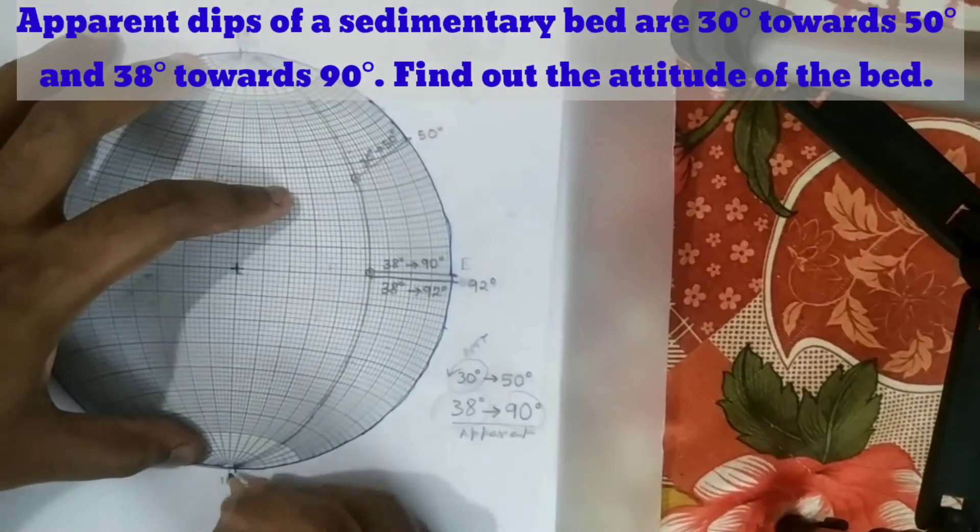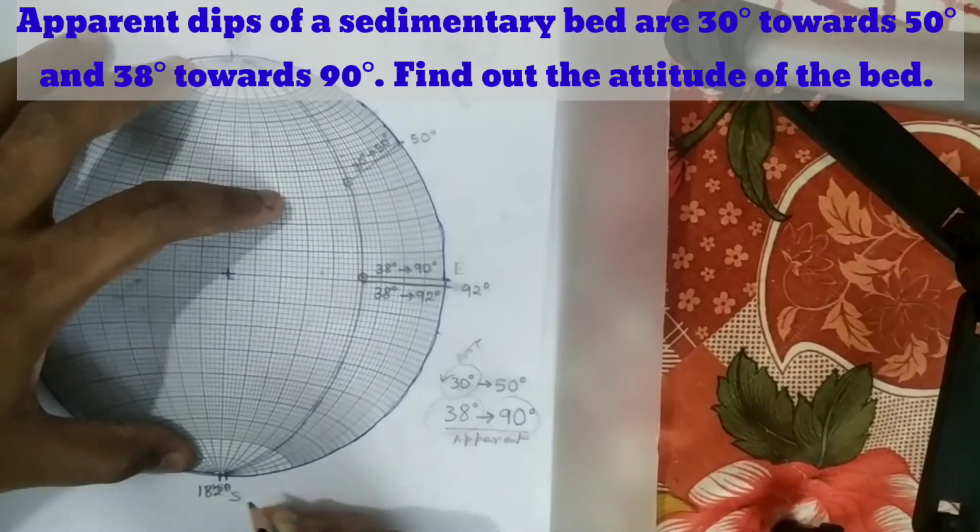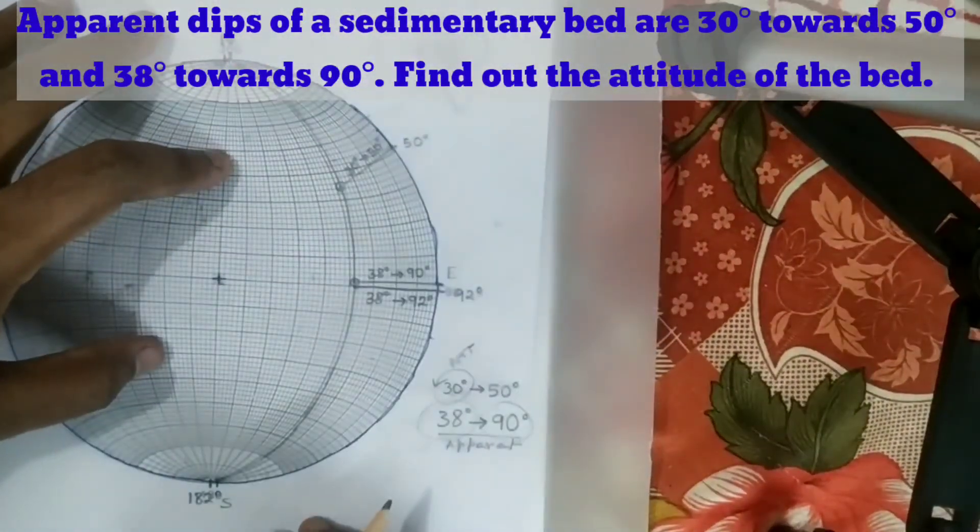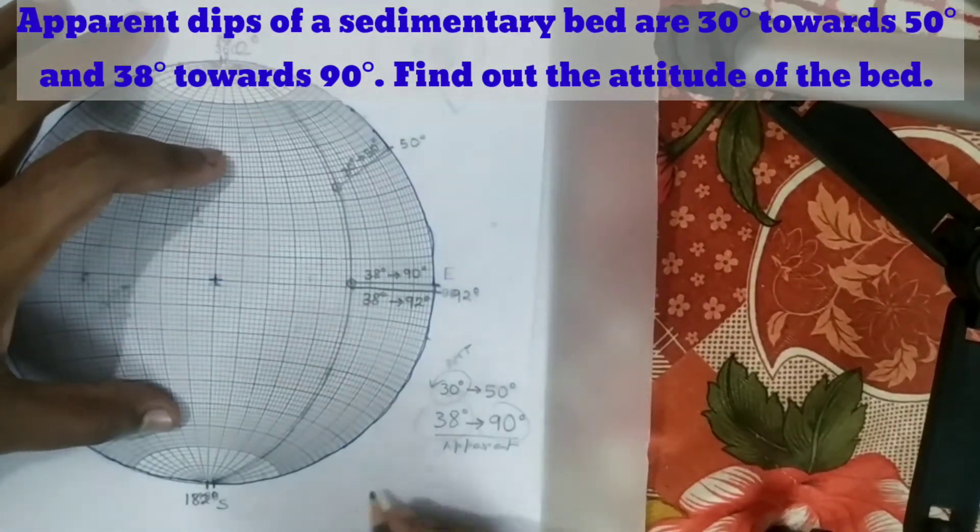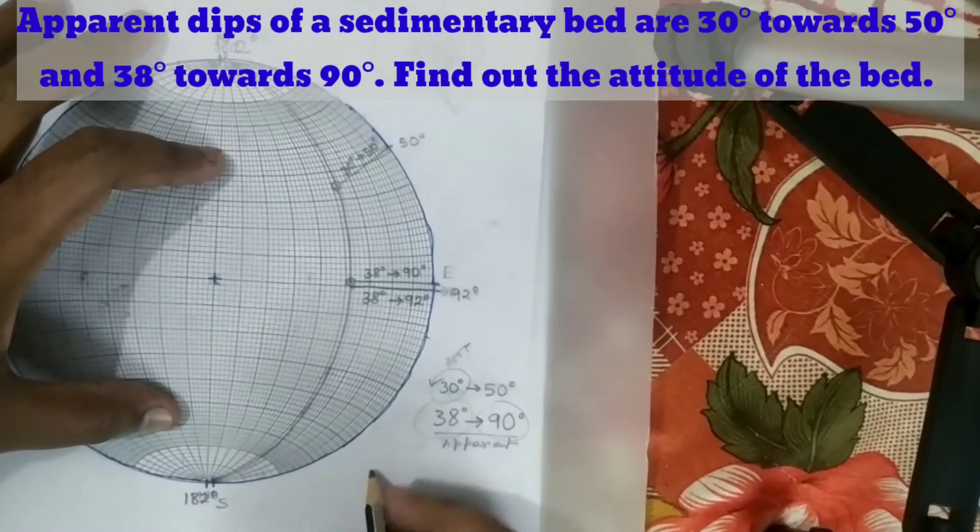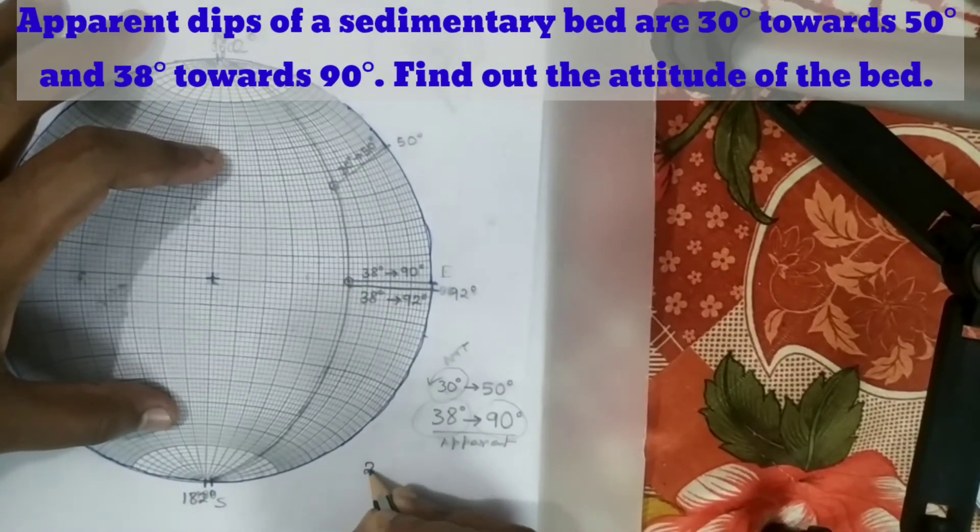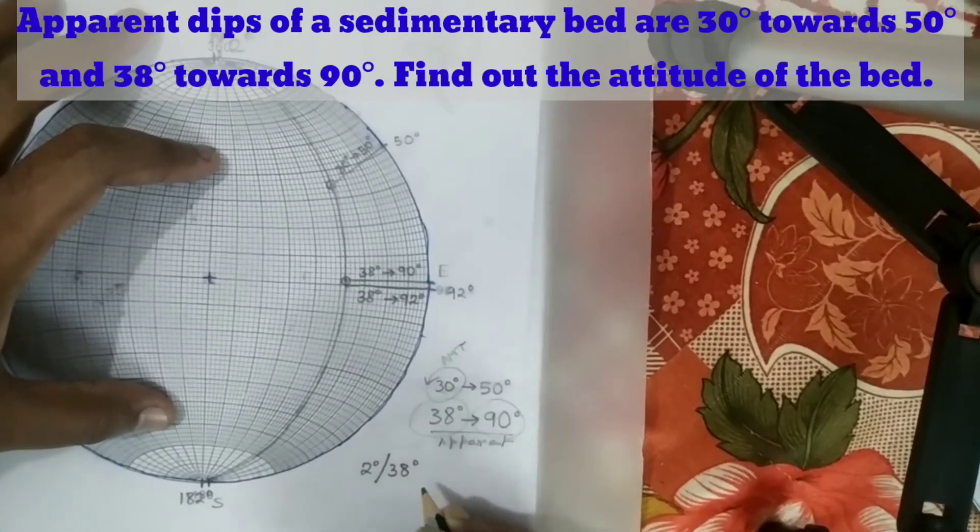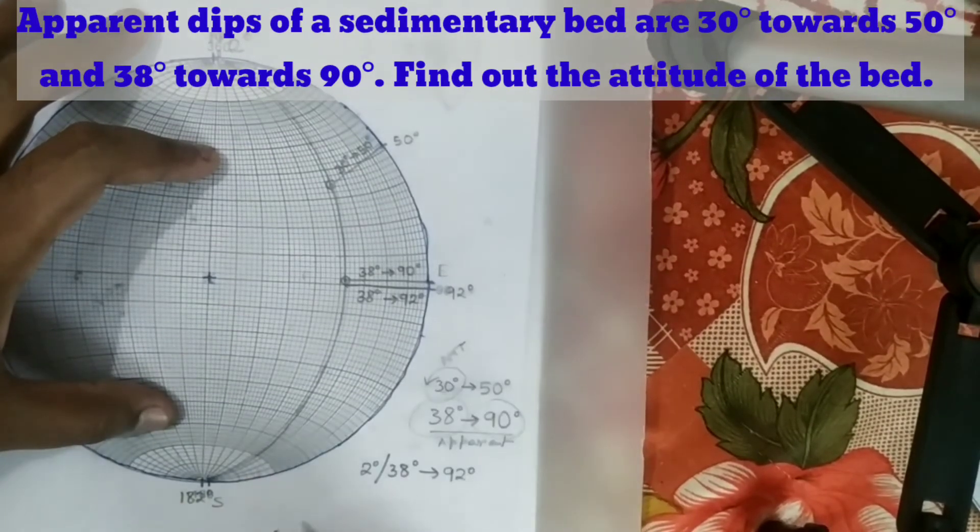And the strike at one end is 182 degrees, and the other end will be 2 degrees. So the attitude of the plane will be 2 degrees, 38 degrees towards 92 degrees.